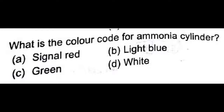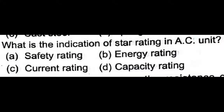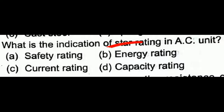What is the color code for an ammonia cylinder — signal red, light blue, green, or white? White is the correct answer for an ammonia cylinder. Next: what is the indication of star rating in an AC unit? We all know that it is an energy rating, so option B is correct.